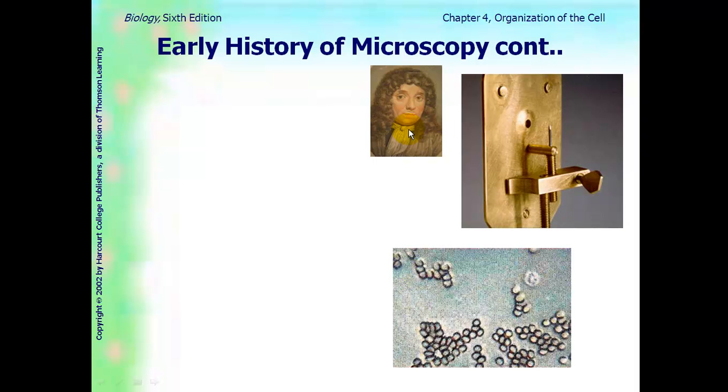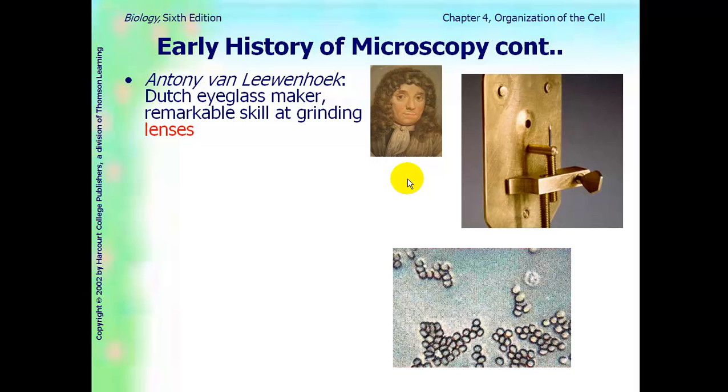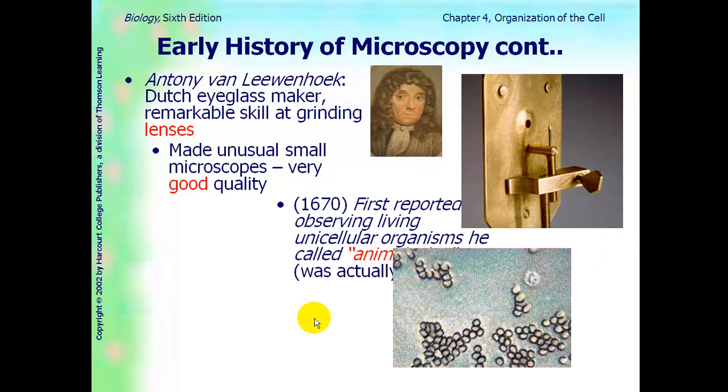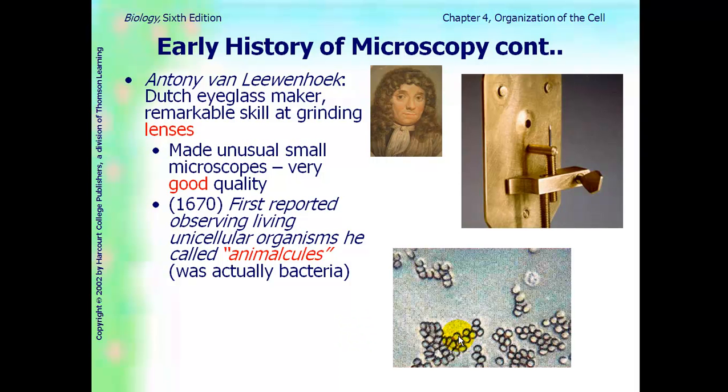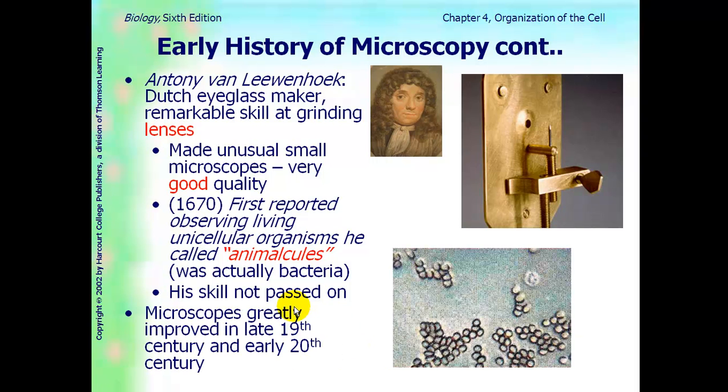Another guy that you should know is this guy right here with the curly hair. His name is Anton Lavenhoek, and he was a lens maker. And as you can see, this was the very first good microscope that he came up. He actually held it up to your eye, and there's a lens right there. His microscopes were very small, but they were extremely good quality. He also saw these things under a microscope. He called them animalcules, unicellular organisms, but he did not realize that they were actually bacteria, and this was in 1670. His skill of lens making was not passed on.